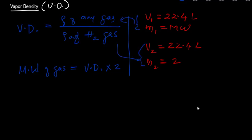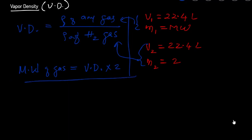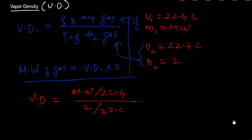When you plug those values in, vapor density equals the molecular weight of the gas divided by 22.4, over 2 divided by 22.4. The volume 22.4 is the same in both, so it cancels out, and vapor density equals molecular weight divided by 2.